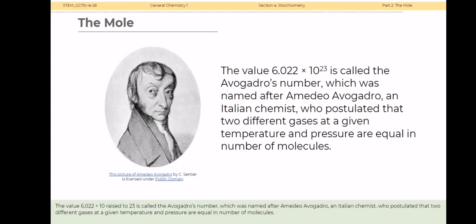The value of 6.022 × 10²³ is called the Avogadro's number, which was named after Amadeo Avogadro, an Italian chemist who postulated that two different gases at a given temperature and pressure are equal in number of molecules.